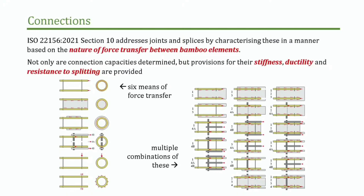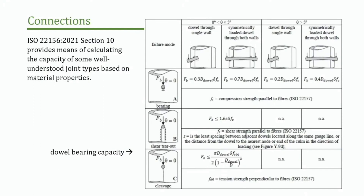We've adopted an approach to connections that's a little bit different — we talk about how force gets transferred from one element to another. A particular bamboo connection may have three or four different force transfer mechanisms. This is based largely on the work of Dr. Andri from Indonesia, who did a fantastic doctorate about ten years ago in Germany. It's a great way to look at connections because it eliminates the actual detail — we talk about force transfer instead. We do have some prescriptive guidance for very simple connections, though these are conservative and would push the designer toward design by testing. If you're building a thousand homes or developing a business model, that makes sense.